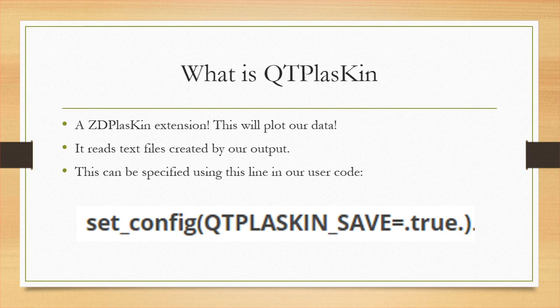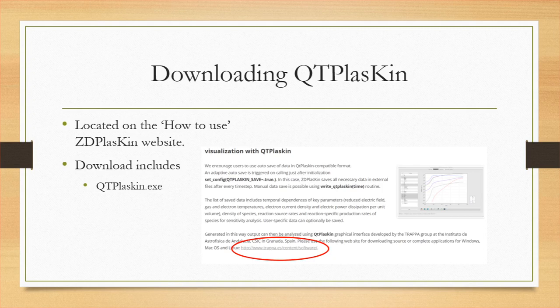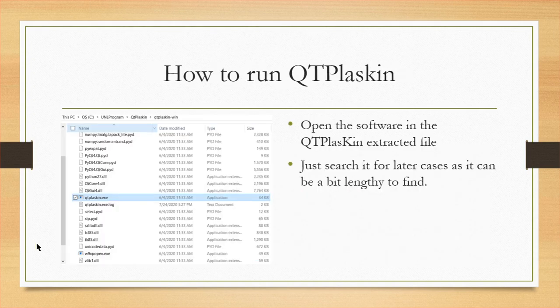Finally, we can talk about QTPlaskin. QTPlaskin is an extension of ZD Plaskin. It'll use our output from the ZD Plaskin data to plot it. To notify the ZD Plaskin software that you want to use this, we need to add this line to our user code. To download QTPlaskin, go to the How to Use section of ZD Plaskin — it'll give you a link on where you can download QTPlaskin. The software itself is called QTPlaskin.exe. It can be a bit tricky to find, so I suggest just looking it up in your search bar. There isn't much to it — you just have to extract your files. And you can keep these in the exact same section as your MinGW and ZD Plaskin.